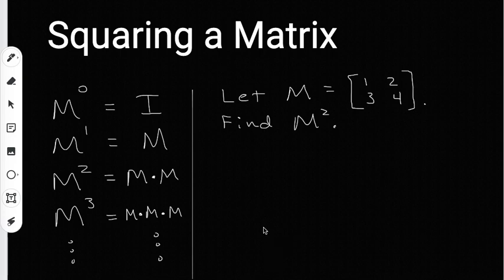Squaring a matrix. Whenever you have a matrix, you're going to have a box with a bunch of numbers in it. It's going to have rows and columns, and you can multiply a matrix by another matrix.